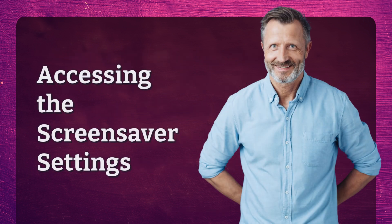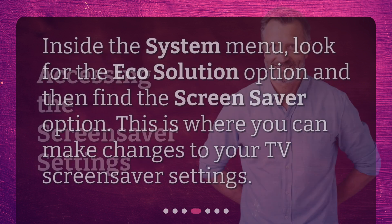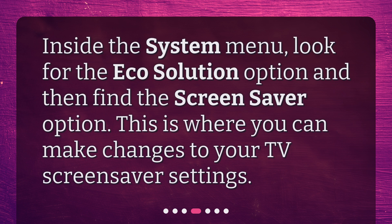Accessing the screensaver settings. Inside the System menu, look for the Eco Solution option and then find the Screen Saver option. This is where you can make changes to your TV screensaver settings.